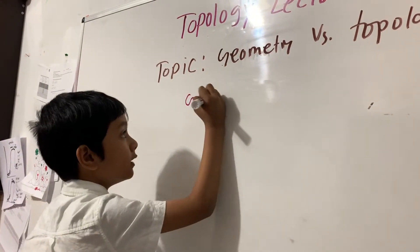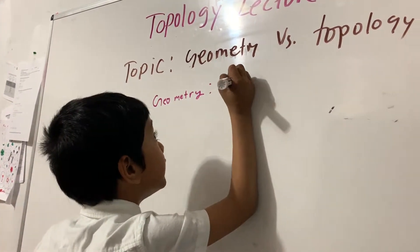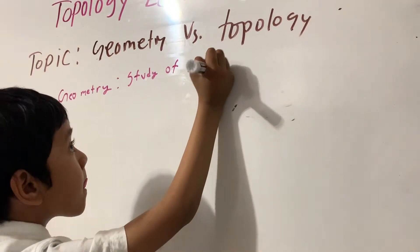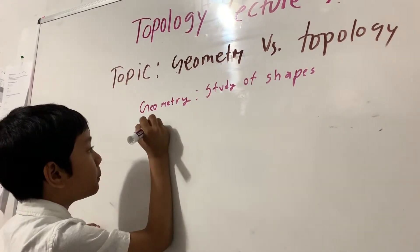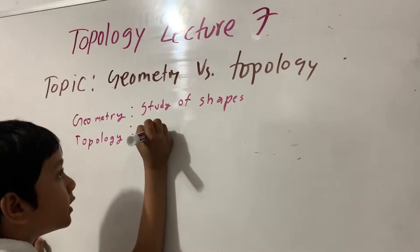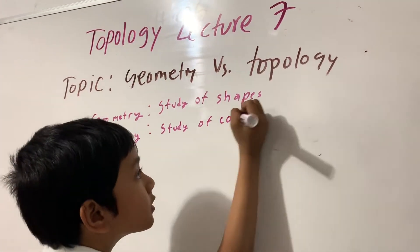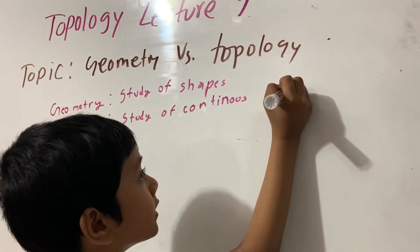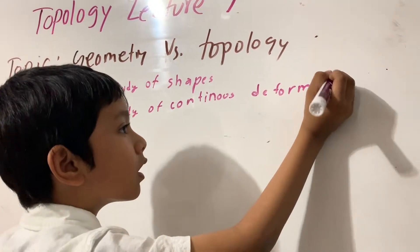So geometry is the study of shapes. Well, topology is the study of continuous deformations.